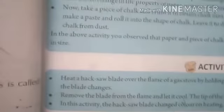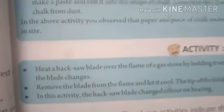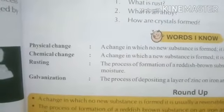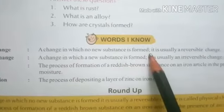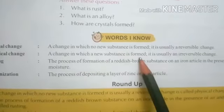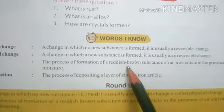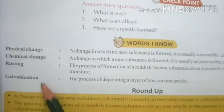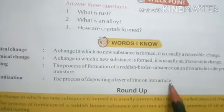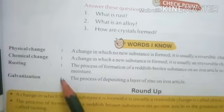Children, read this topic — physical change — from your book. Tomorrow we will continue with the next topic, which is chemical change. Open page number 49 and write the following definitions in your notebook. First, physical change: a change in which no new substance is formed; it is usually a reversible change. Second, chemical change: a change in which a new substance is formed; it is usually an irreversible change. Third, rusting: the process of formation of a reddish brown substance on an iron article in the presence of air and moisture. Fourth, galvanization: the process of depositing a layer of zinc on an iron article. Read the chapter and write these definitions in your notebook. Thank you.